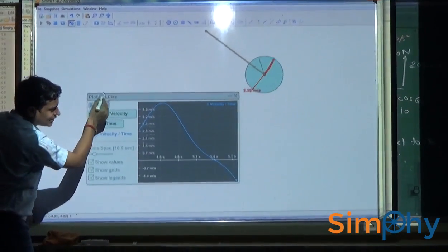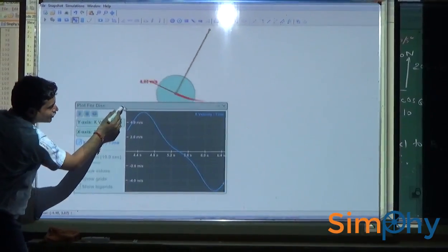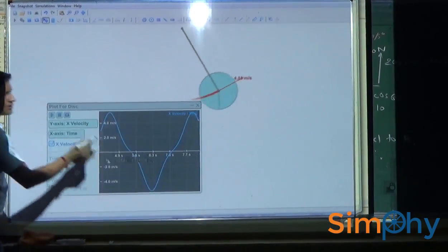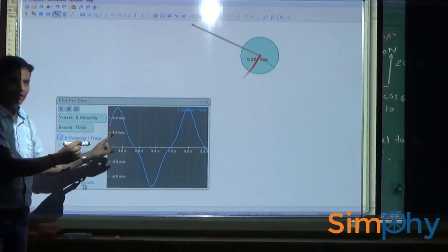Now you can clearly see the velocity of the body is varying very much similar to sine function, but it is not exactly a sine function.